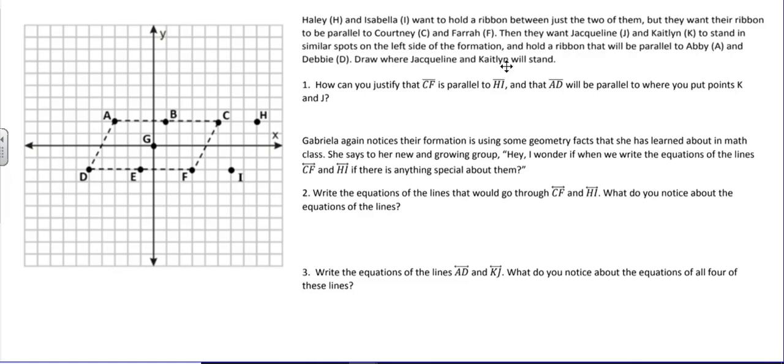So first let's draw where Jacqueline and Caitlyn will stand. They want to be over here in this area, but they want to be parallel to AD and the same distance away from AD as HI is to CF. So if H is three units away from C, then let's put Jacqueline three units away from point A and then Caitlyn will be three units away from Debbie.